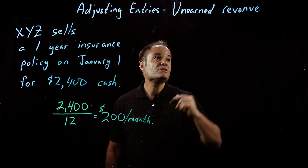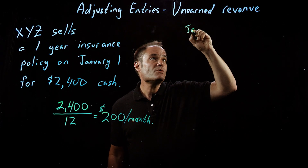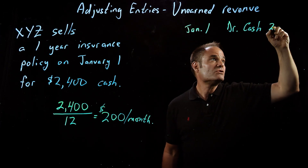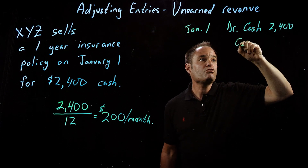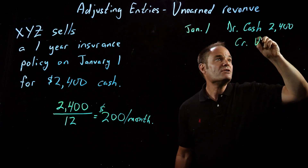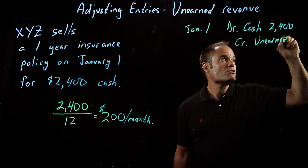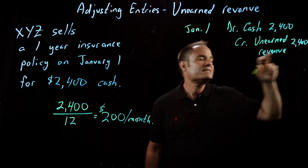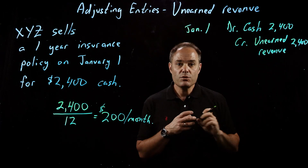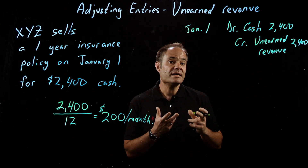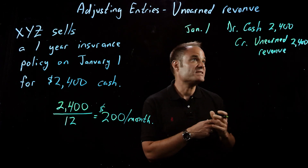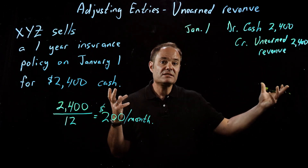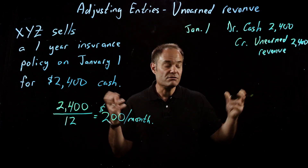If we do the journal entries for this transaction, on January 1st, this company is going to debit cash because they received the check — $2,400 — and they're going to credit a liability account called unearned revenue. Cash has increased by $2,400, and this liability account called unearned revenue has also increased by $2,400.